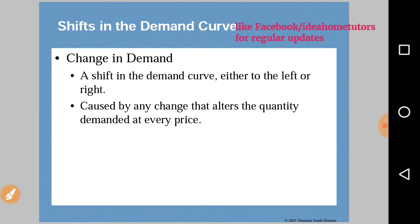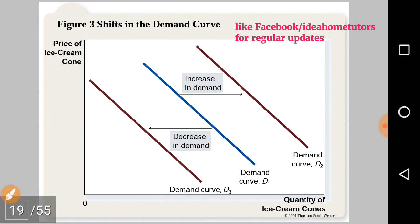The demand curve shifts either left or right. When there is an increase in demand, there is a rightward shift; when there is a decrease in demand, there is a leftward shift. These changes are caused by any change that alters the quantity demanded at every price. As shown in the diagram, increase in demand is a shift to the right, and decrease in demand is a shift to the left.